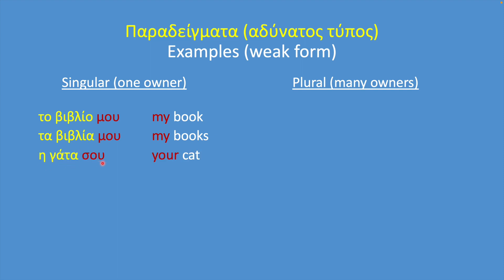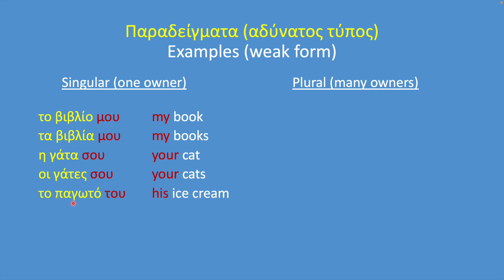So μου doesn't change because it refers to the owner, not the owned, and the owner is I. Η γάτα σου — your cat. Η γάτες σου — your cats. The same thing here: the owner is you, so it doesn't matter if you have one cat, η γάτα, or many cats — σου will be the same. Το παγωτό του — his ice cream. Τα βιβλία της — her books. Το σπίτι του — its house.